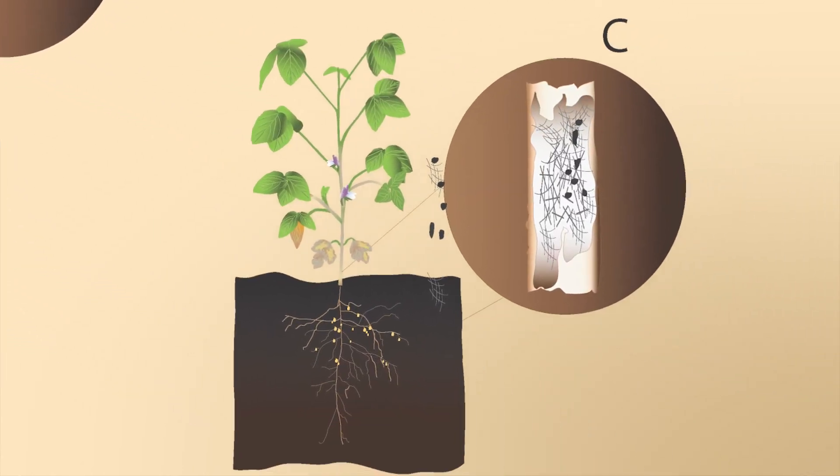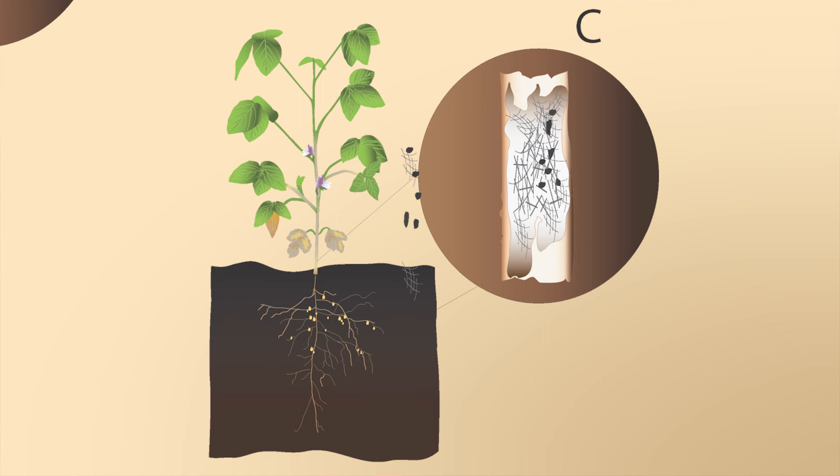After the infection, the fungus grows within the stem and root and begins to interfere with water uptake in the plant by clogging the vascular tissue as the hyphae, or body of the fungus, moves through the plant.